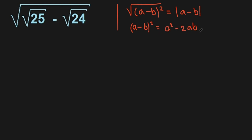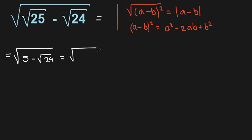So now we have the square root of: the square root of 25 is 5, minus the square root of 24. This equals the square root of 5 minus the square root of 24, which can be written as the square root of 4 times 6. That gives us the square root of 5 minus 2 times the square root of 6.